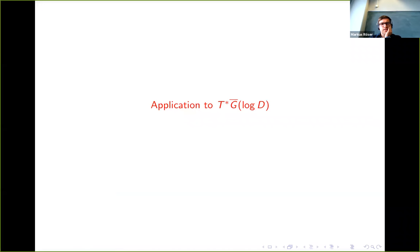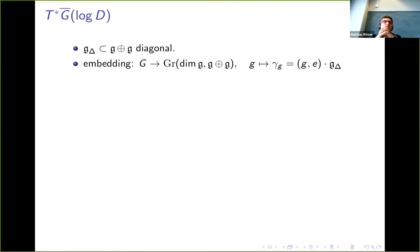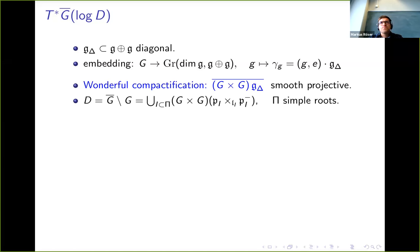What we are interested in is the logarithmic cotangent bundle of the wonderful compactification of G. So let me tell you what that is. One way to describe the wonderful compactification is to say we can write down a natural embedding of G into the Grassmannian of dimension dim(G) dimensional planes in the product of G with itself, basically by identifying a group element with the graph of adjoint G, more or less. The wonderful compactification is the closure of that copy of G inside the Grassmannian.